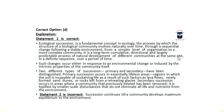Ecological succession is a fundamental concept in ecology in which the structure of a biological community evolves naturally over time through sequential change, from a simple level of organization to a more complex community. It is a long-term, cumulative, directional, and largely predictable process of natural development of different communities at the same site in a definite sequence. Such changes occur either in response to an environmental change or due to the intrinsic properties of the community itself. Two types of succession are primary and secondary.